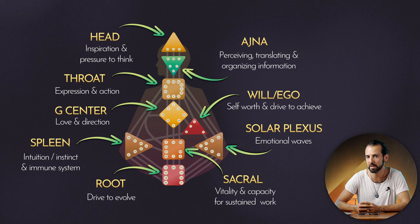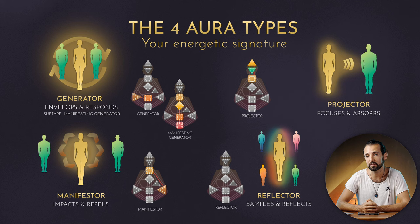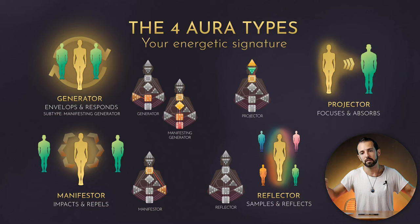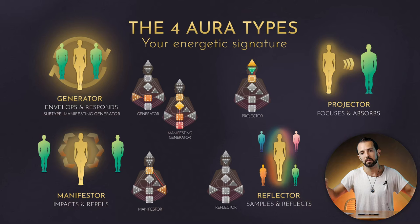One of the most important factors in human design are the aura types. Depending on which centers you have defined, it determines your aura type. This is your energetic field — about two times your hands stretched out as far as you can. If you're a generator, this field is enveloping, it invites people in and keeps them together. If you're a manifestor it's quite the opposite — it's a closed aura that pushes people to do things, to initiate things. It's not open, it's not inviting like a generator's.